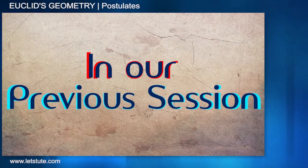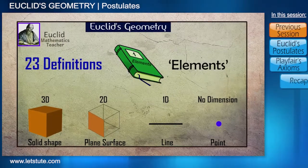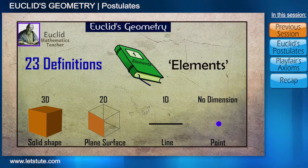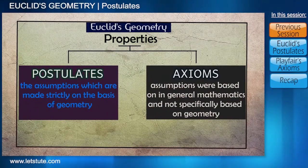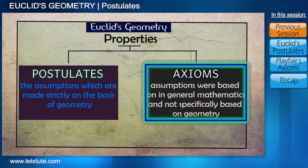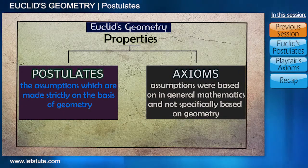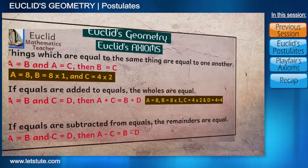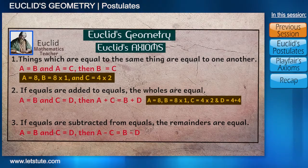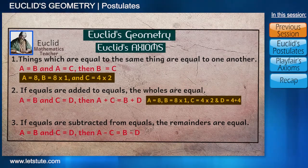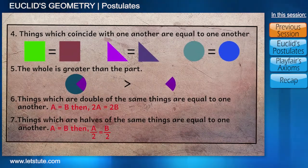In our previous session, we have seen what the various definitions by Euclid were. He put forth various properties and divided them into axioms and postulates. We saw what the difference between them is and learnt what the various axioms are. I hope you have seen our previous session in order to understand this session more thoroughly.